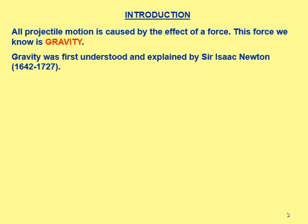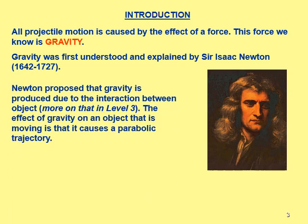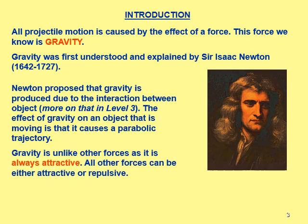All projectile motion is caused by the effect of a force, and this force we know as the force of gravity. Gravity was first understood and explained by Newton in the 17th century. He introduced us to the idea of gravity — that's the story involving apples. Newton proposed that gravity is produced due to the interaction between objects, and the effect of gravity on a moving object is that it causes a parabolic trajectory.